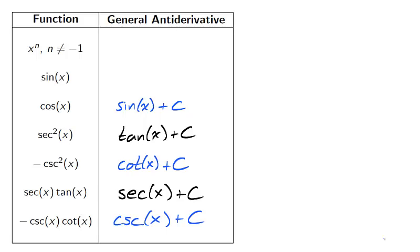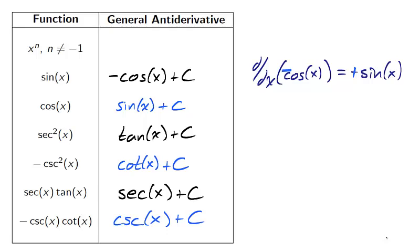The first two functions on our list are not as simple to calculate as the bottom of the list, but they are the most useful. The derivative of cosine is negative sine, so the derivative of negative cosine is sine. Therefore the general antiderivative of sine of x is negative cosine of x plus c.